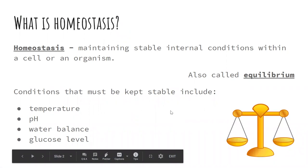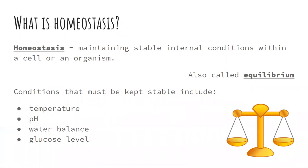So what is homeostasis? Homeostasis is the process of maintaining a stable internal balance within a cell or organism. Homeostasis can also be called equilibrium. So homeostasis is basically you and your cells being able to maintain an equal and stable balance no matter the outside circumstances. Some conditions that we must keep stable include temperature, pH, water balance, and glucose or sugar levels.